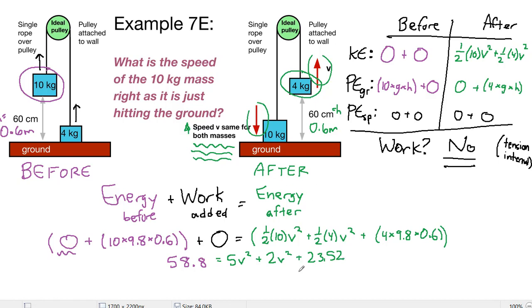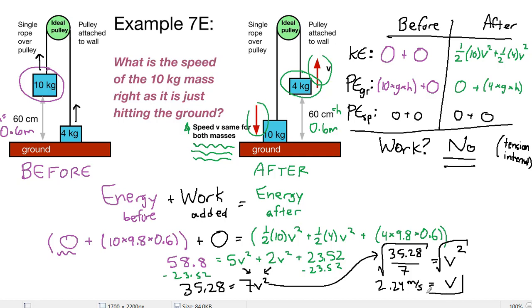Then we subtract 23.52 from both sides. And we get 35.28 on the left. 5 V squared plus 2 V squared is 7 V squared. And so to finish solving, we divide by 7. So 35.28 divided by 7 is equal to V squared. And we'll take the square root of that. And we end up with a final speed of 2.24 meters per second. And that is the end of the problem here.